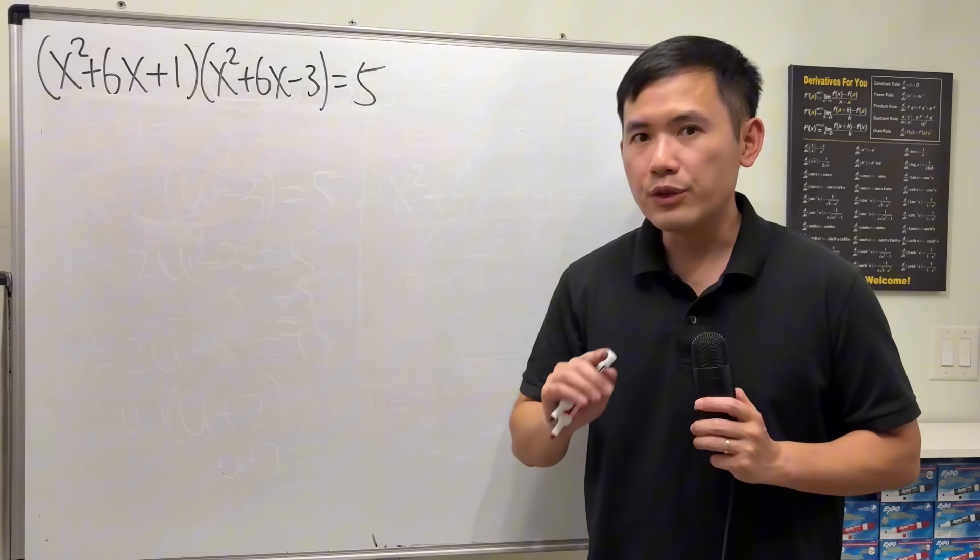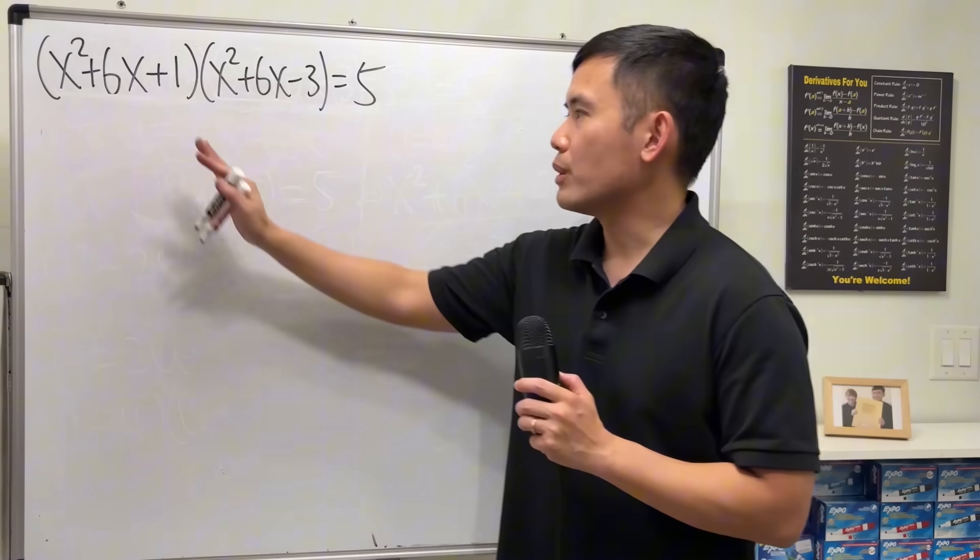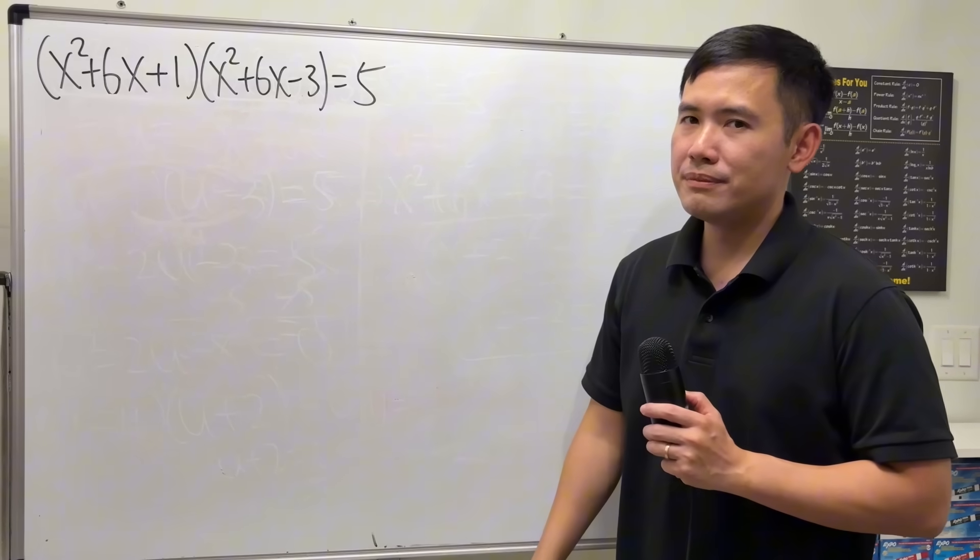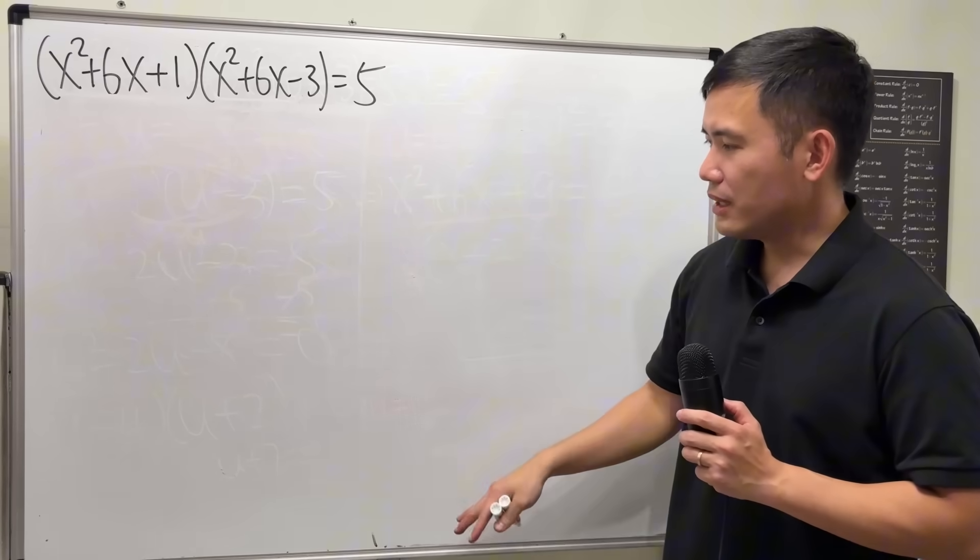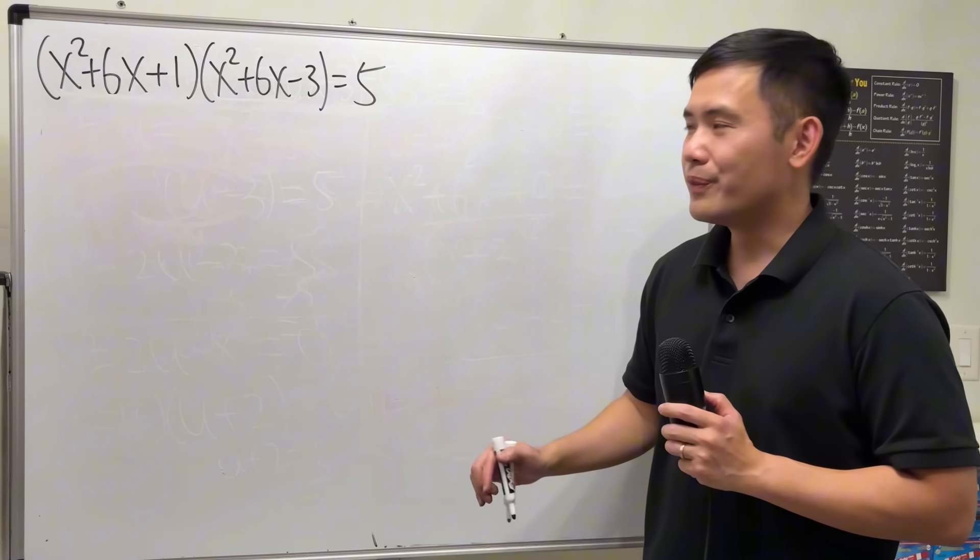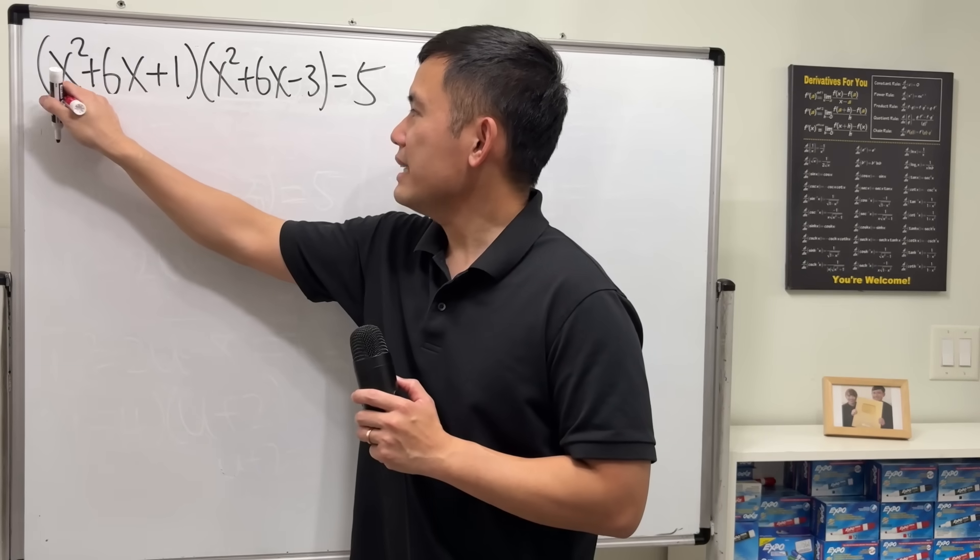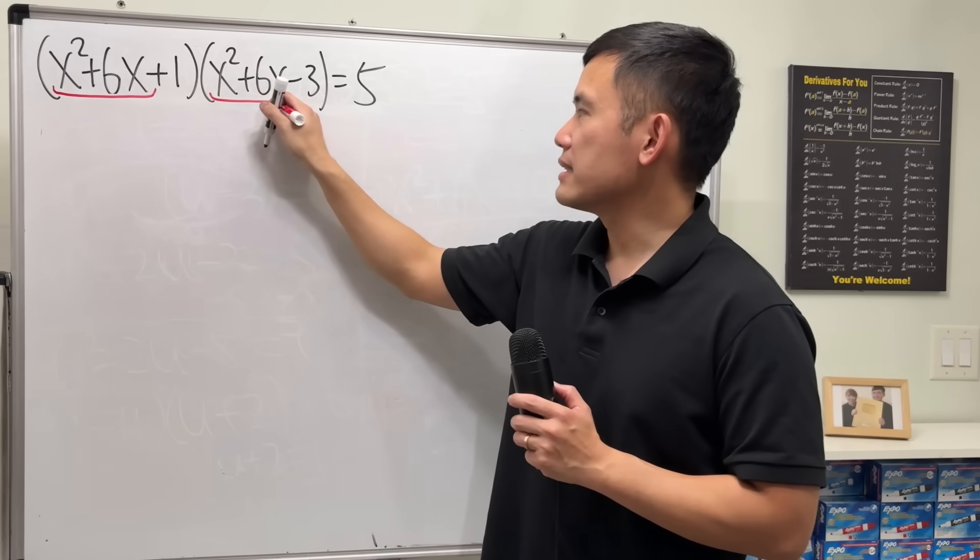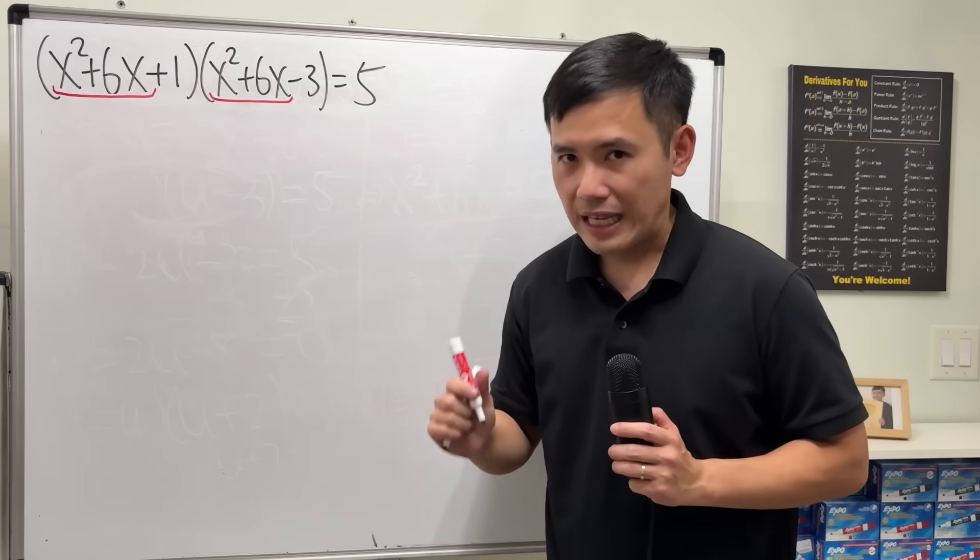So the first thing that you don't want to do is to multiply this and that out. Because you'll get so many terms, it's going to be too long. So, what do we do though? Well, notice that x squared plus 6x is in common, and that's the key. That's where the substitution comes in.